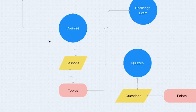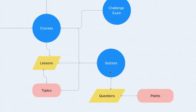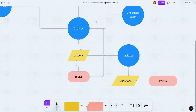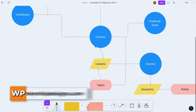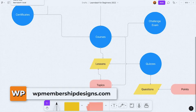For courses, there are two lower post types assigned to them: lessons and topics. Note that you can create topics without lessons. There are also quizzes, which need questions, and once the enrolled user answers those correctly, points can be awarded. If you integrate LearnDash with add-ons like GamiPress, you can gamify your members' experience.